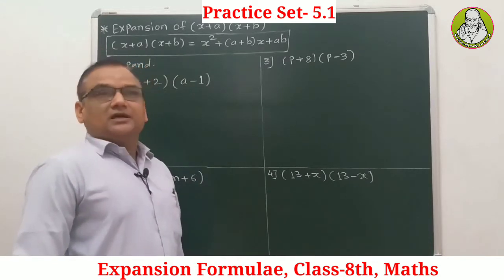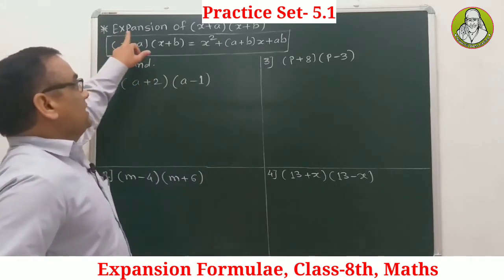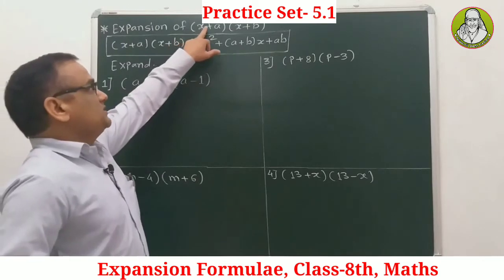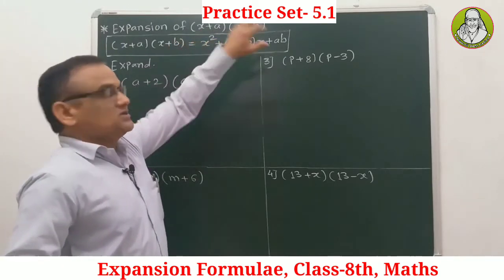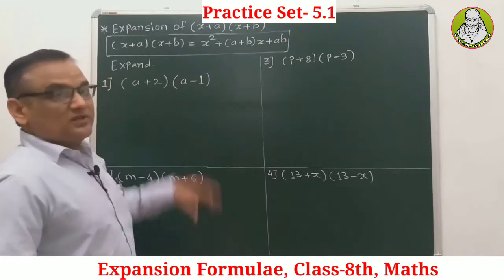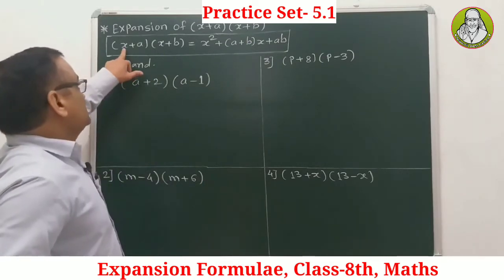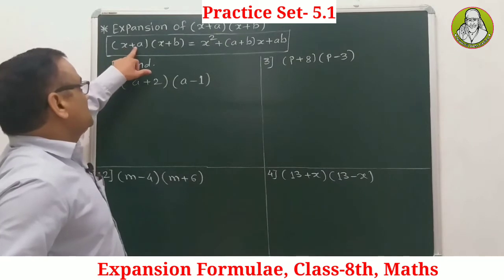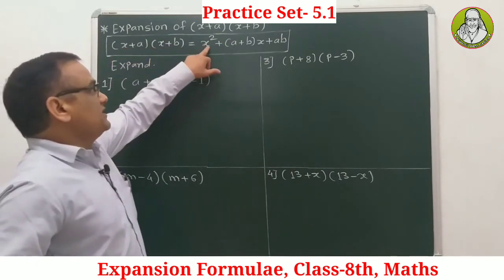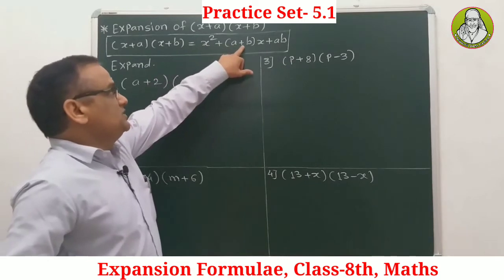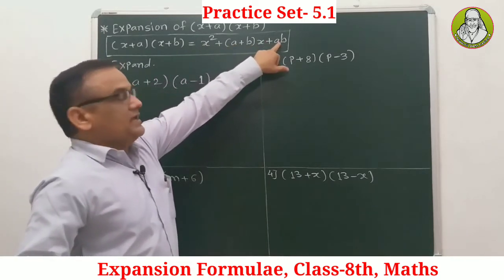We are going to learn the first expansion formula — expansion of (x + a)(x + b). The formula is: (x + a)(x + b) = x² + (a + b)x + ab.